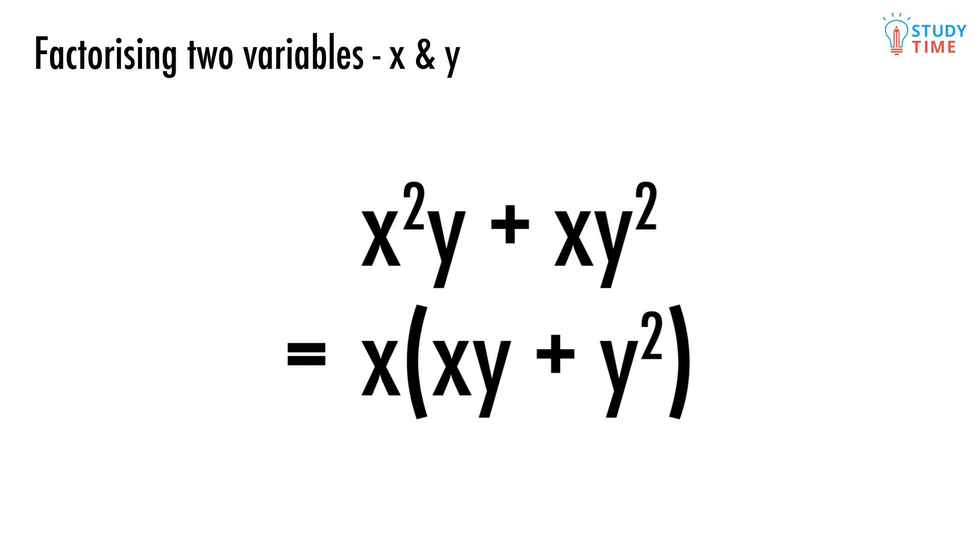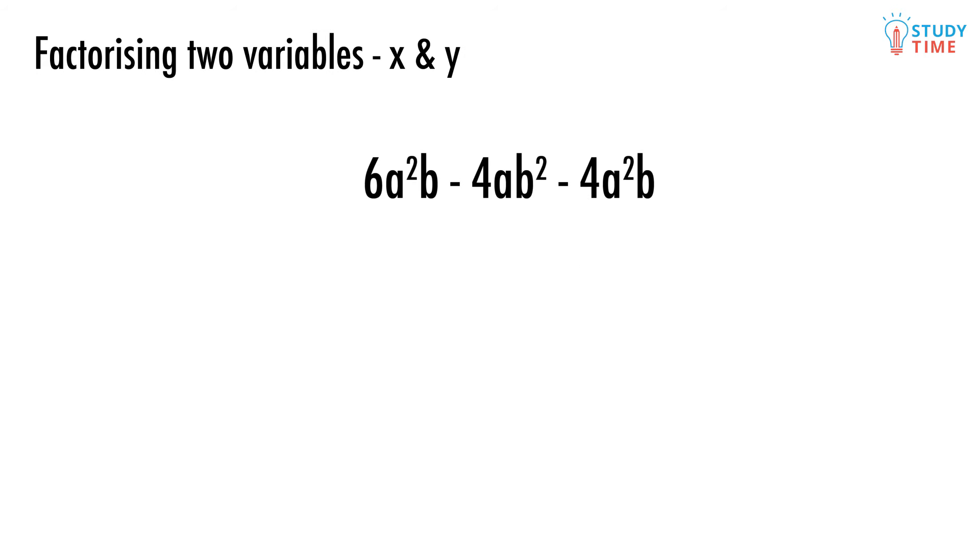See how we've technically divided each of these terms by our common factor x - this is how we can rewrite it while keeping it the same. This might seem all a bit useless, but check out this example. When we have something complicated in maths, we like to factorize it and simplify it as much as we can to make things easier. Don't let all those a's and b's and squares scare you - just look for like terms.